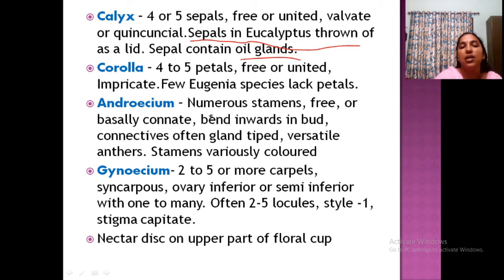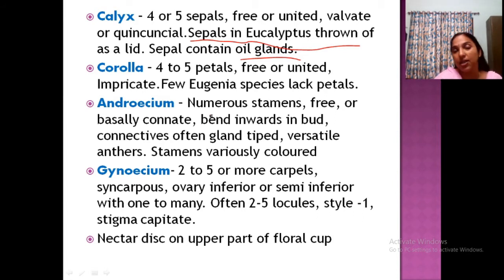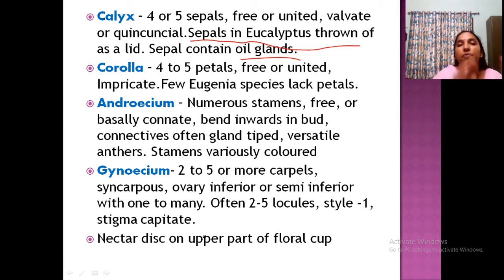The gynoecium has two to five locules, a single style, and a capitate stigma. A very important feature is the nectary disc present on the upper part of the floral cup. This nectary disc sits on the upper part of the floral cup.